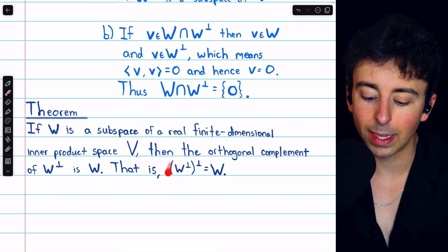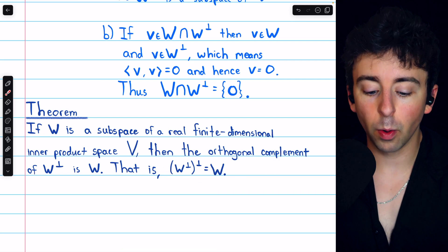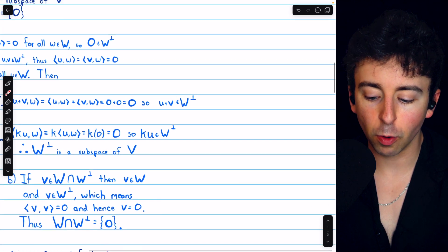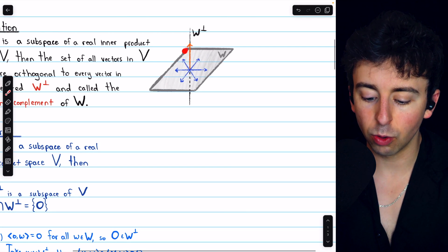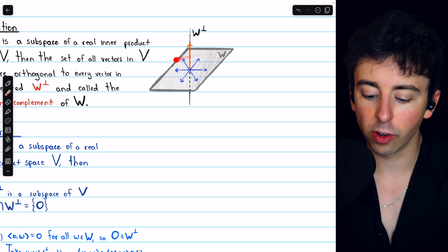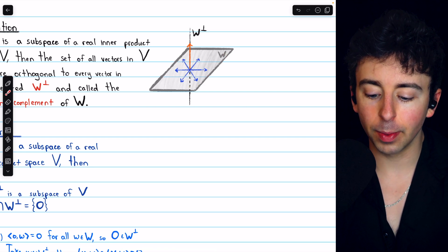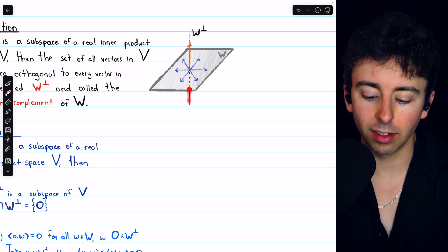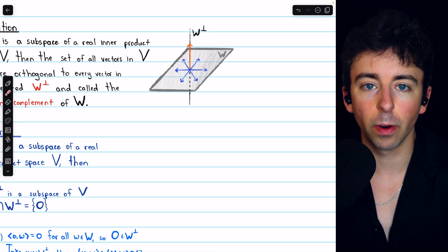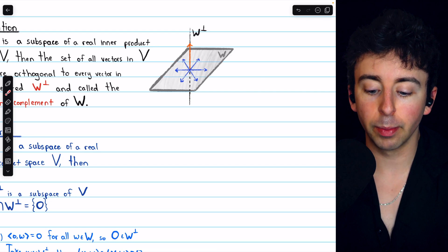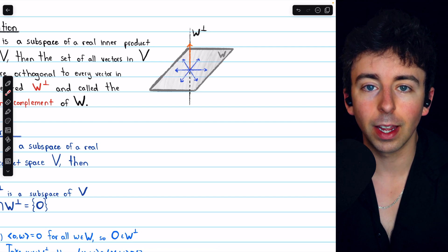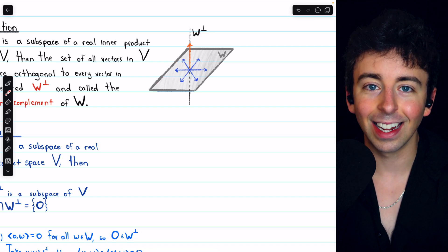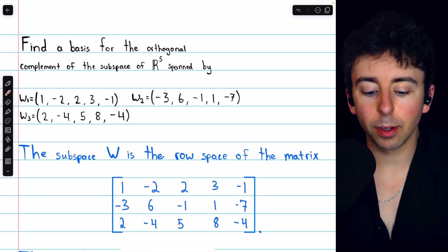Going back to the picture in R3, we had the subspace which was a plane through the origin, and its orthogonal complement is a line normal to the plane also passing through the origin. The orthogonal complement of that line, which is itself a subspace, would just be the plane again.